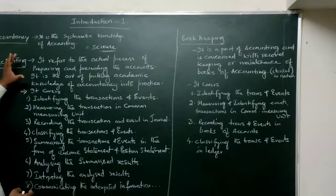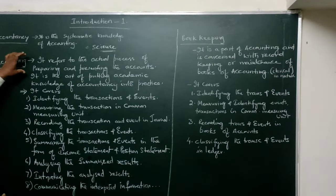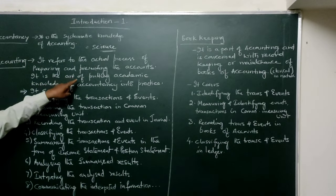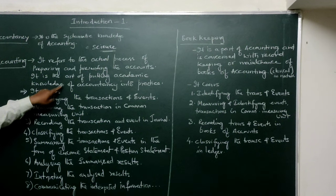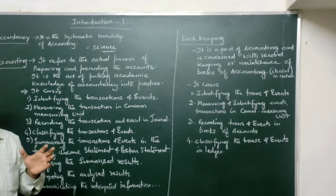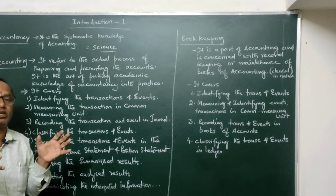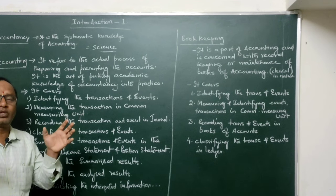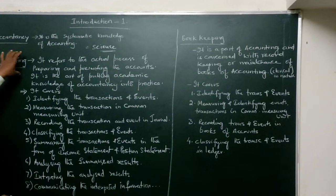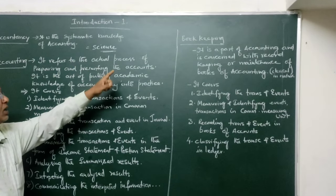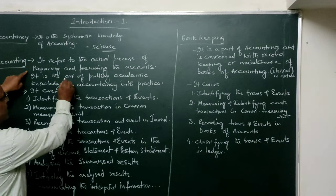Now, what is accounting? Accounting refers to the actual process of preparing and presenting the accounts. It is the art of putting academic knowledge of accountancy into practice. This definition clearly explains that accounting is the actual process of preparing and presenting accounts. In the business, whatever accounts we prepare relate to transactions and events taking place in the business, and accounting is the method we adopt for preparing and presenting those accounts.